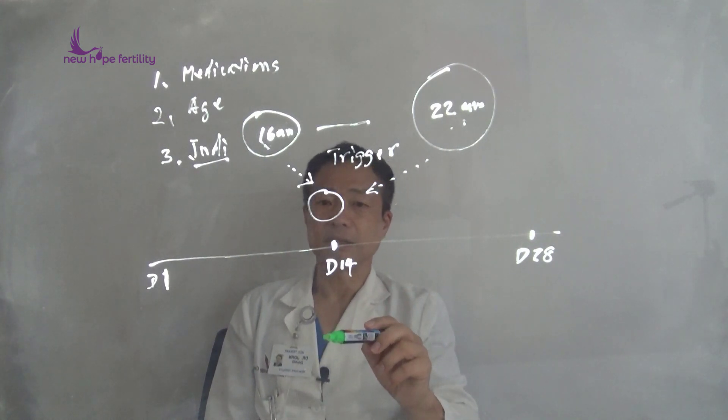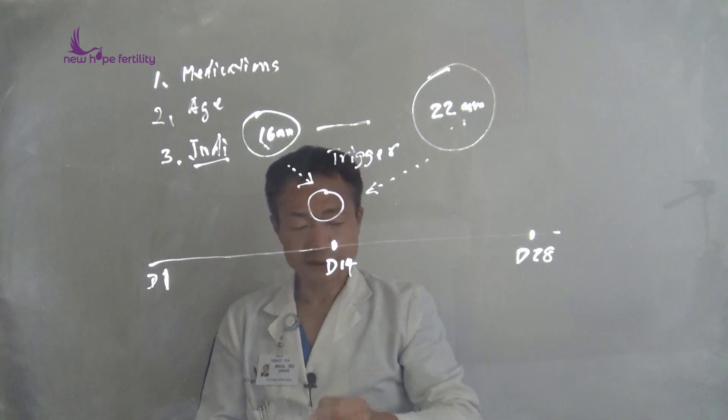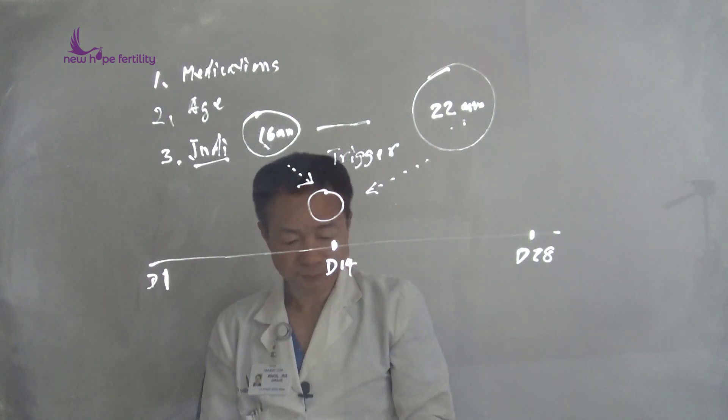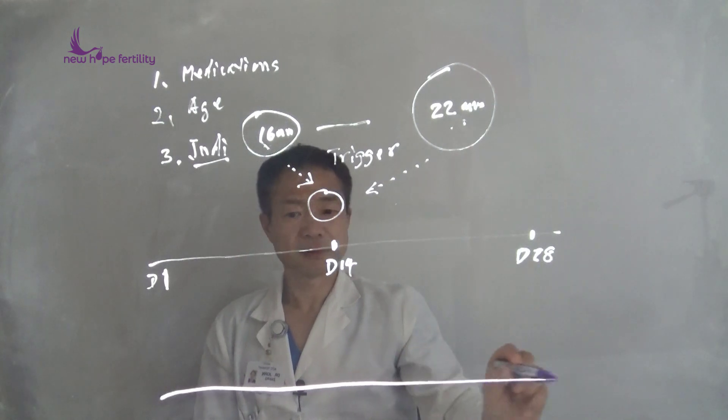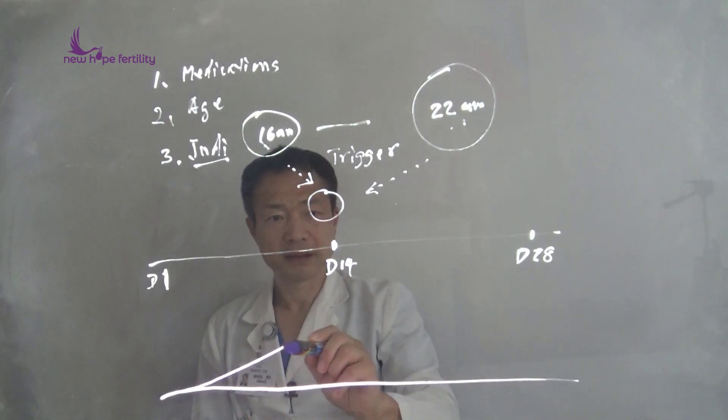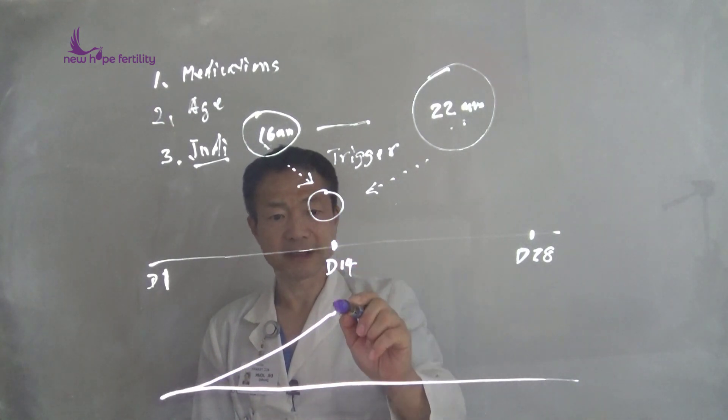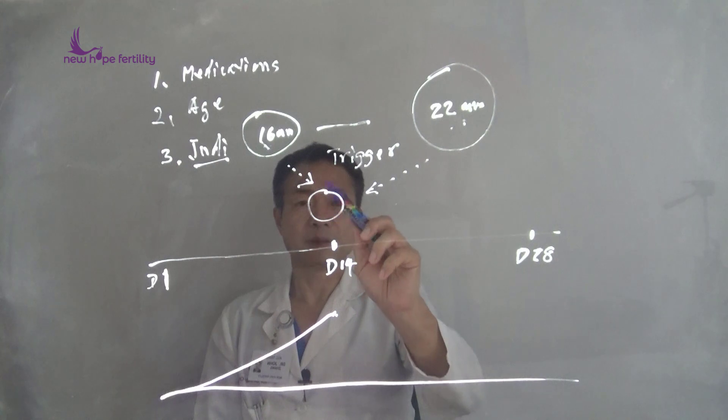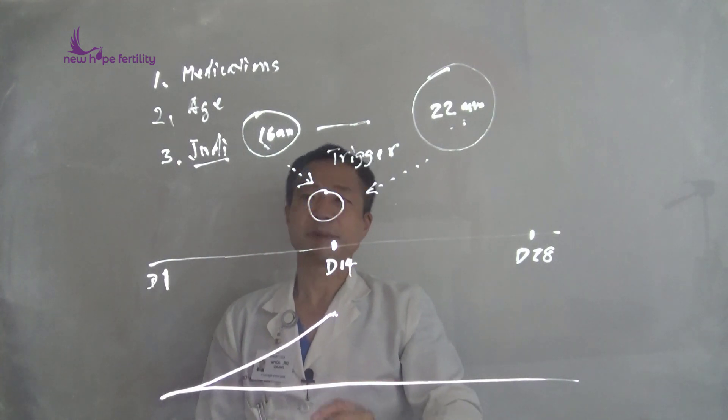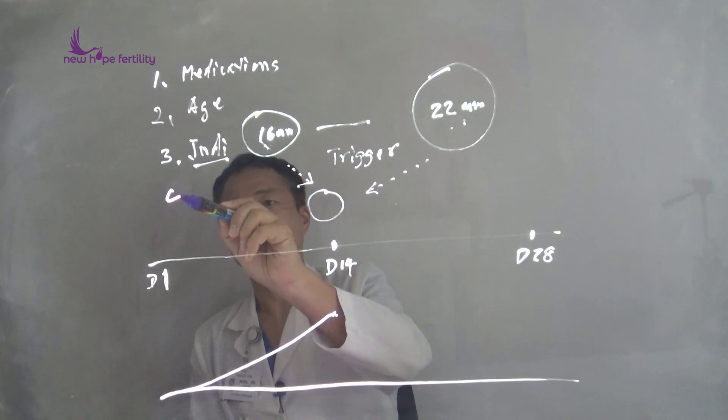It also depends on the estrogen levels. At the time we're getting ready to ovulate, if the estrogen level is still lower, the follicle may need to grow a little bigger. If estrogen level is also adequate, then our trigger may be early.